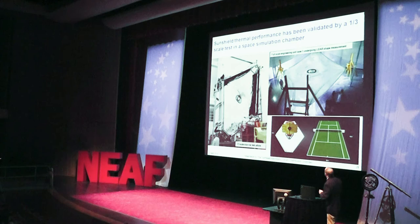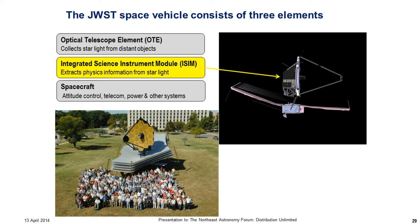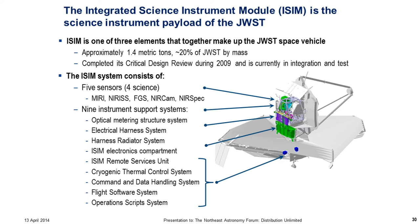Now let's look at the business end of the telescope — the science instrument package, called the integrated science instrument module. It's about 1.4 metric tons of that 6.5 metric tons, and it's completely finished. It consists of five sensors — four for science and one for pointing the telescope — and nine other systems that help those sensors work in space.